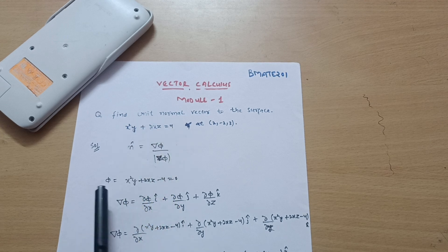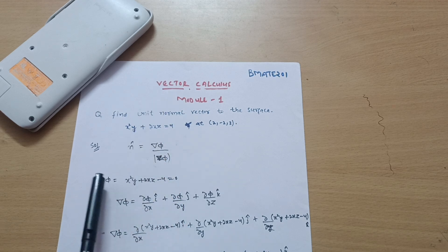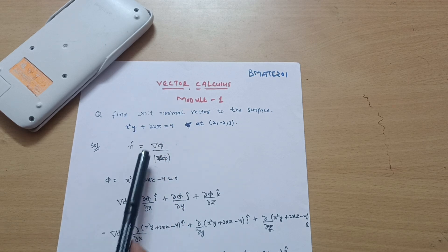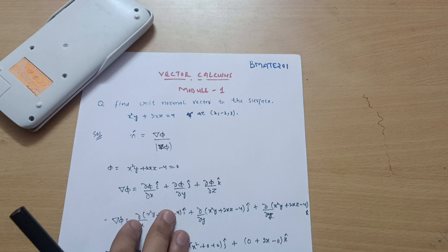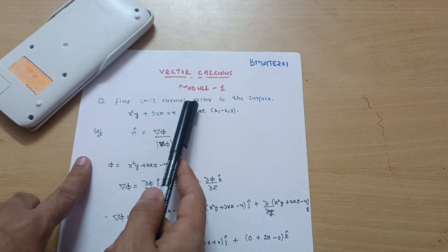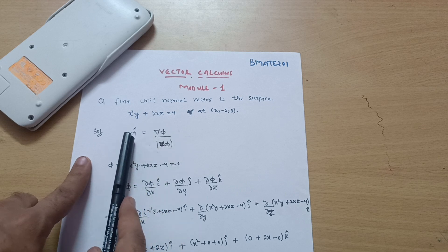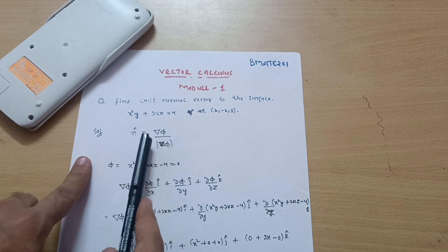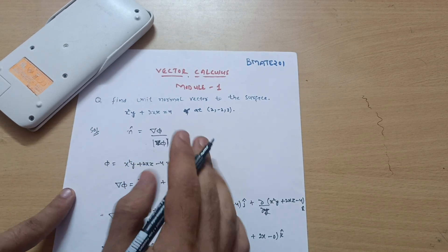This surface is denoted by phi — it is a scalar quantity, but we are dealing here with vectors. Whenever we combine the del operator with phi, this del phi becomes a vector quantity. So phi is given; what we have to calculate is the unit normal vector. We have a formula: the unit normal vector is equal to del phi divided by mod of del phi. So del phi is your vector quantity.